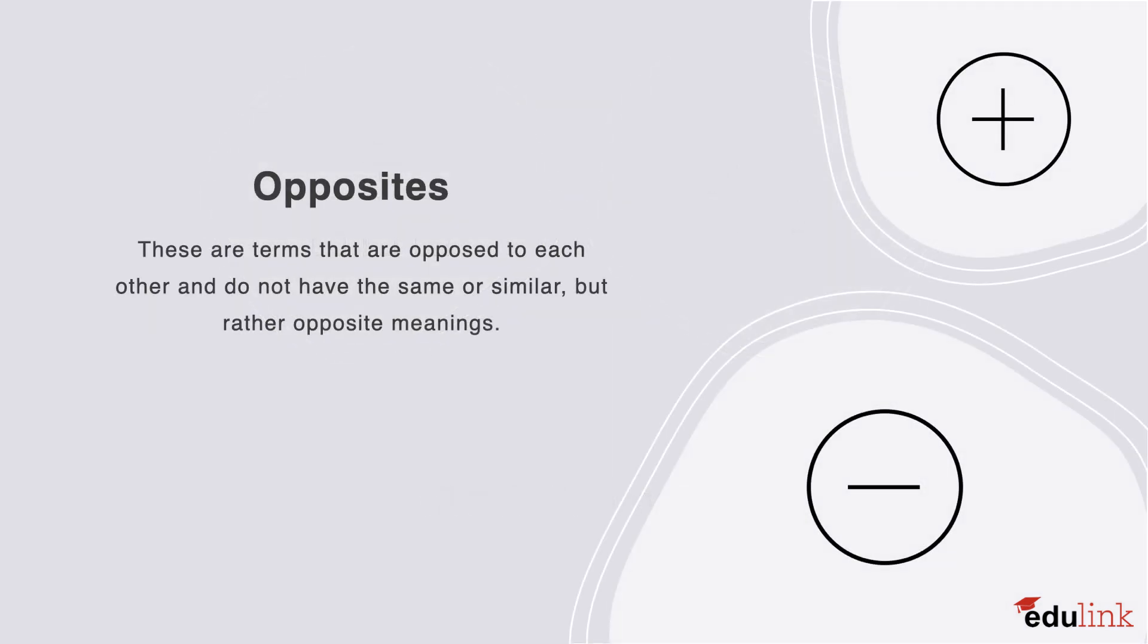So starting off, we have opposites. These are terms that are opposed to each other and do not have the same or similar meaning, but rather opposite meanings. Another word for opposite that you might hear is antonym. For example, an opposite pair would be to accept versus to reject, smooth versus rough, or dark versus light.